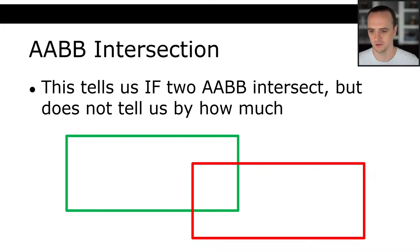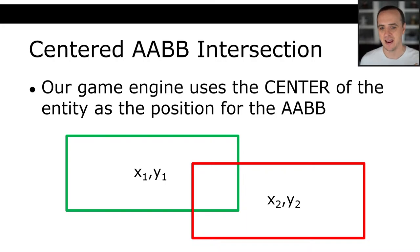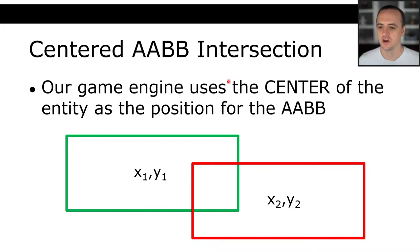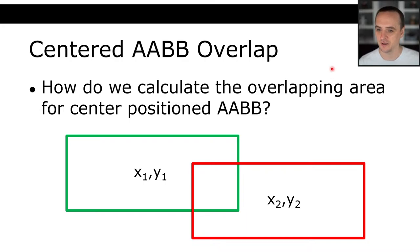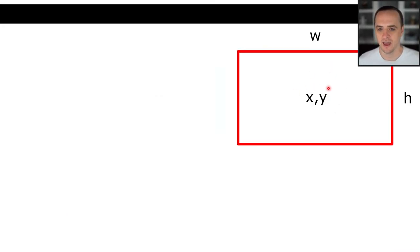Centered AABB intersection. In our game engine, in order to make some calculations very easy, we are actually going to be storing our rectangles by the center of the rectangle rather than the top-left. This is how we're going to be storing our rectangles in assignment three and assignment four. How are we going to calculate overlapping area for center-positioned axis-aligned bounding boxes?